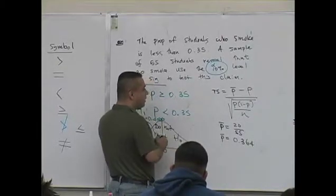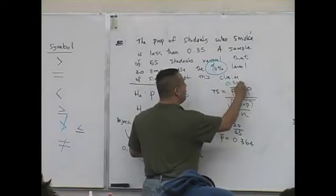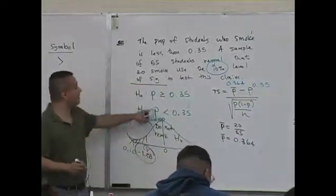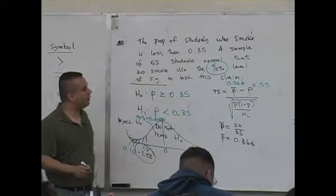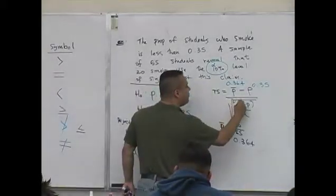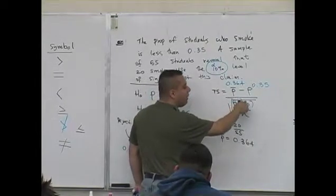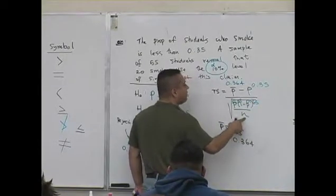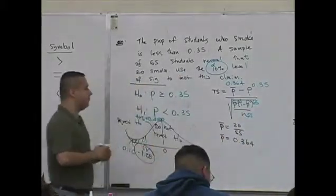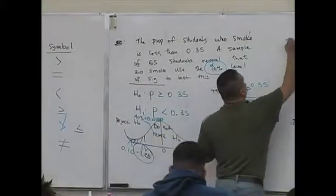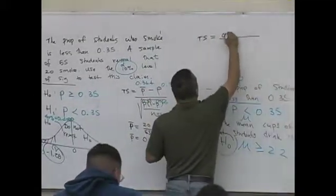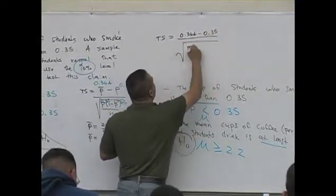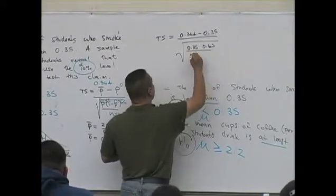So plug in all these values. 0.364. P is 0.35, the value of p is indicated here, 0.35. Here 0.35, and you need the complement of 0.35. What's the complement of 0.35? 0.65. Sample size of n was 55.